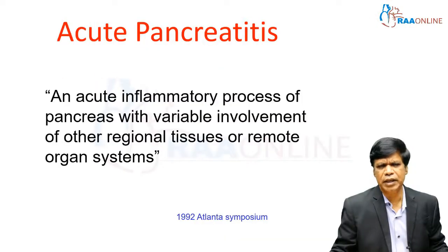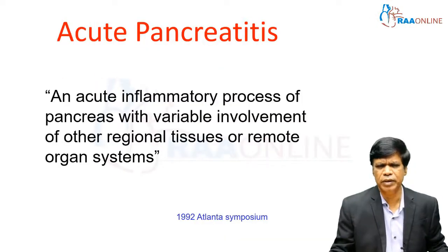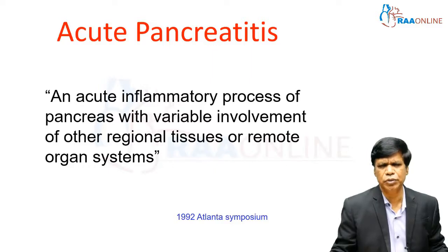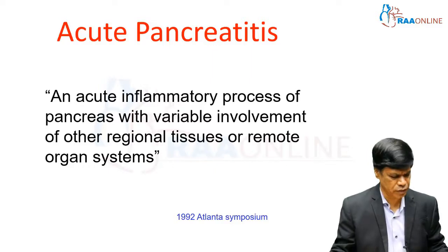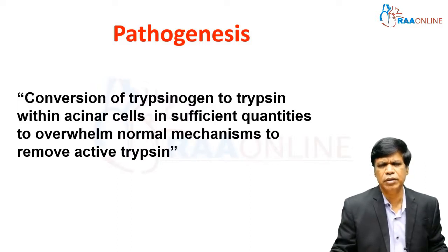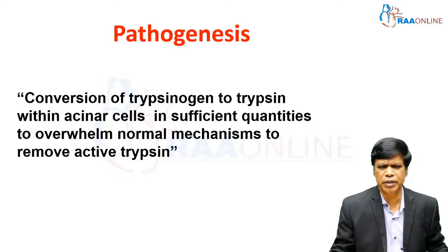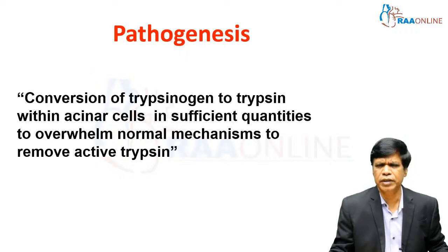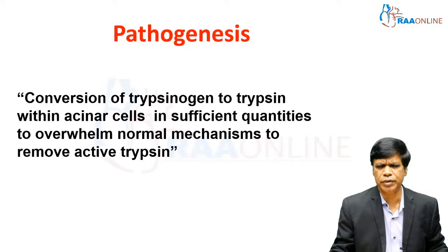By definition, acute pancreatitis is an acute inflammatory process of the pancreas with variable involvement of other regional tissues or even remote organ systems. The actual pathogenesis involves inactive trypsinogen synthesized in the acinar cells of the pancreas being converted to trypsin within the acinar cells themselves in sufficient quantities to overrun the normal mechanisms to remove the active trypsin.